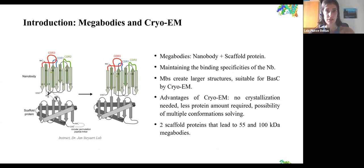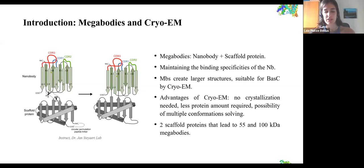Another approach to find new structures is the use of megabodies and cryo-electron microscopy. Megabodies are formed with a nanobody plus a scaffold protein in a single chain. They maintain the binding specificities of the nanobodies, but with the scaffold protein they create larger structures that are better for cryo-EM, which needs big structures — BASC alone or with a nanobody isn't big enough. Advantages of cryo-EM include no crystallization needed, less protein amount required, and the possibility of solving multiple conformations. In our lab we have two scaffold proteins bound to different nanobodies, leading to 55 and 100 kilodalton megabodies.